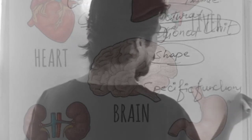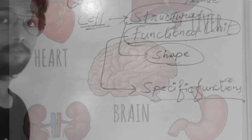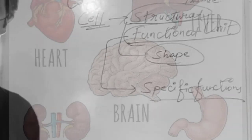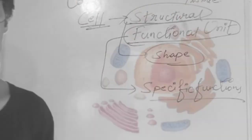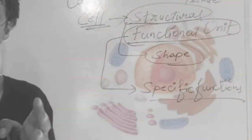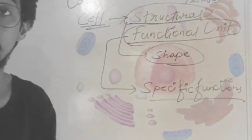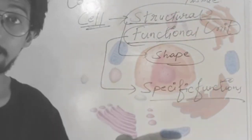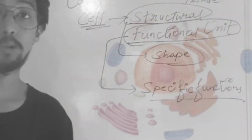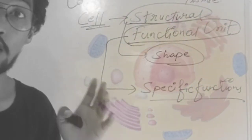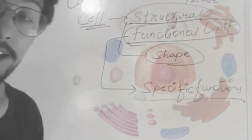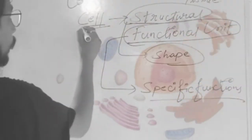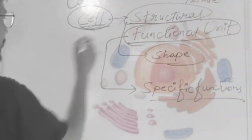The cell performs many specific functions as we studied in Chapter 5 — like mitochondria, known as the powerhouse of the cell; endoplasmic reticulum, acting as the transporting system; Golgi apparatus; vacuoles; plastids. All of these are performing a particular function. Now what happens when these cells combine?